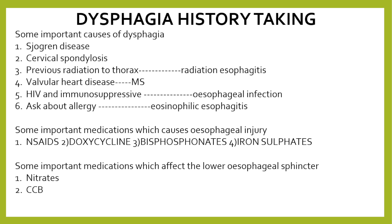Some important causes of dysphagia other than those discussed are Sjogren's disease, cervical spondylosis, radiation to the thorax leading to radiation esophagitis, valvular heart disease like mitral stenosis — where the enlarged left atrium presses on the esophagus — and esophageal infections like CMV, HIV, and herpes.